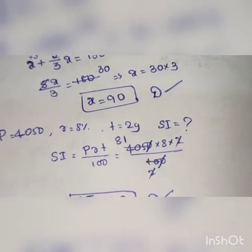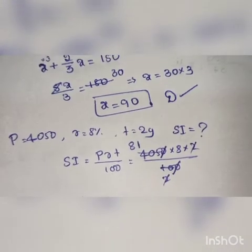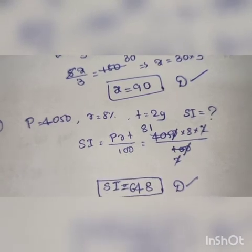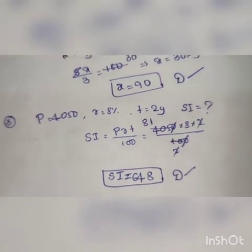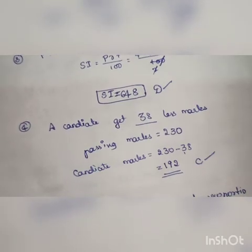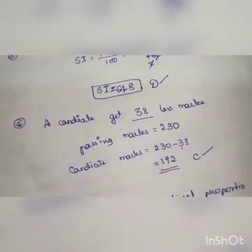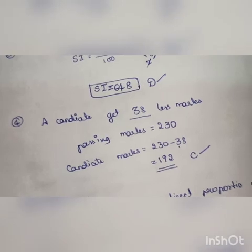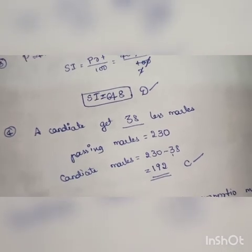So 4050 into 8 into 2 divided by 100. Calculating: 405 times 8 times 2 equals 648. Simple interest is 648. Option D is the right answer.